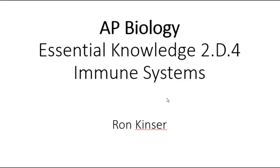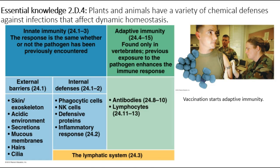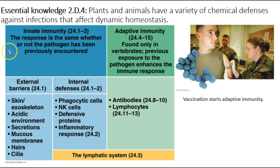This screencast is dedicated to Essential Knowledge 2D4 for AP Biology — essentially the immune system. There are various forms of immune system depending on how complex an organism is, ranging from very basic things seen in invertebrates to more complex systems seen in mammals. These immune systems are ways that organisms maintain homeostasis in a constantly changing environment where they're constantly under attack by other organisms, bacteria, and viruses.